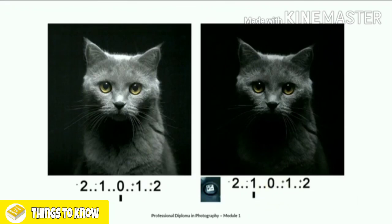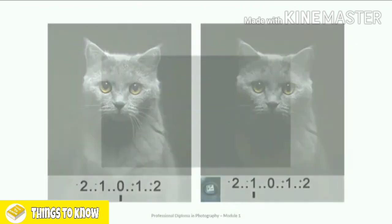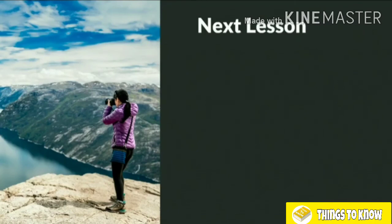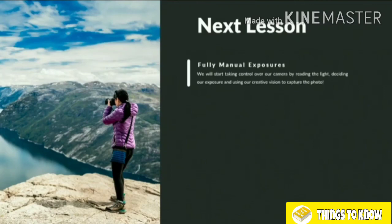With that, we have a very good foundation for what we're going to be doing in our next lesson — fully manual mode. This is a really big, key lesson of the course. We're going to look at doing fully manual exposures, how we can take full control over the camera by reading the light, deciding our exposure based on what aperture and shutter speeds we want to use, and using our creative vision to finally capture that photograph in fully manual mode.